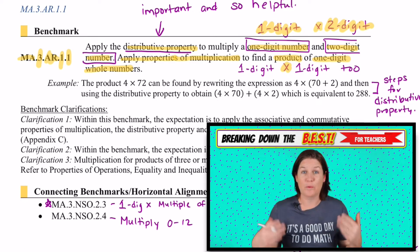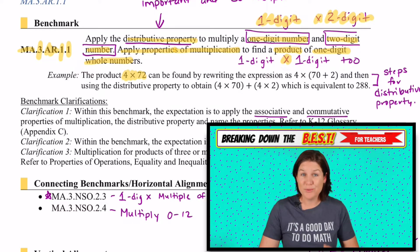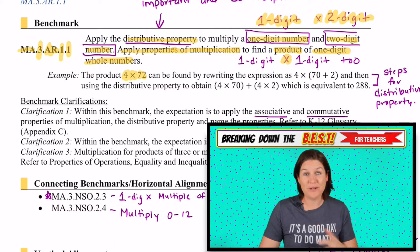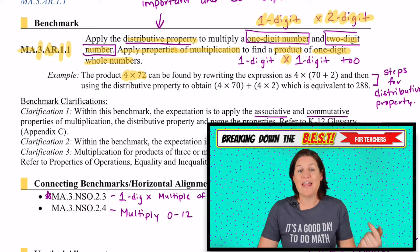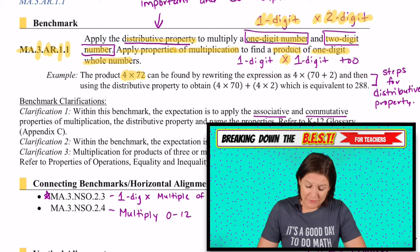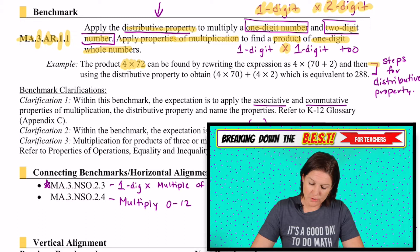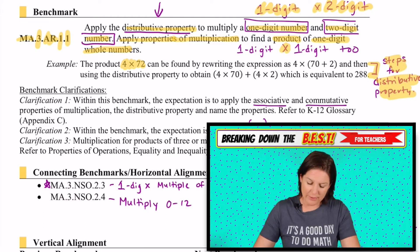This is different for third grade when we're coming from the common core standards. As you can see in the example right here, the product of four times 72, that used to be a fourth grade skill that we were working on, and now it is in third grade, which is awesome because our third graders can definitely handle it. So I love this example here because it shows you the steps for the distributive property, like how we're thinking about it.